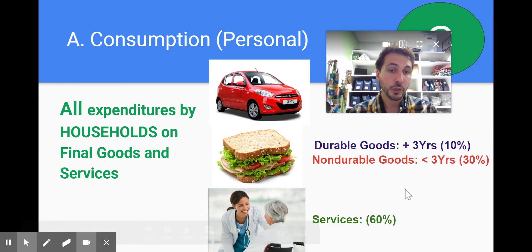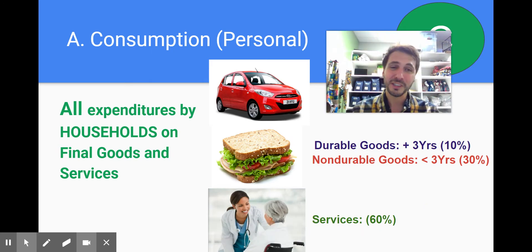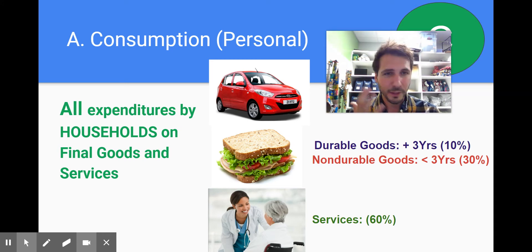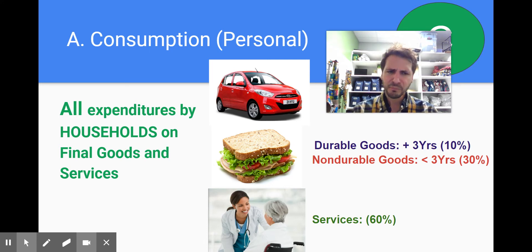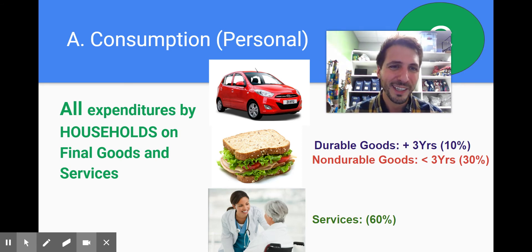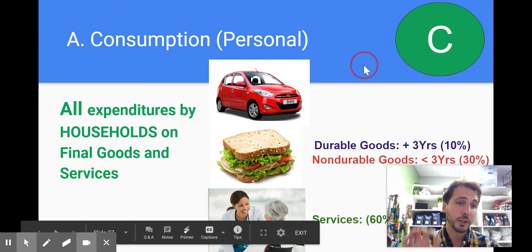Now, there are two types of goods: durable goods and non-durable goods. A durable good is something that lasts longer than three years, making up about 10% of our total consumption. Non-durable goods last less than three years — things like food — those are about 30%. And then services — we're actually a service economy. About 60% of our consumption is on services, so we pay a lot for the services that we want.